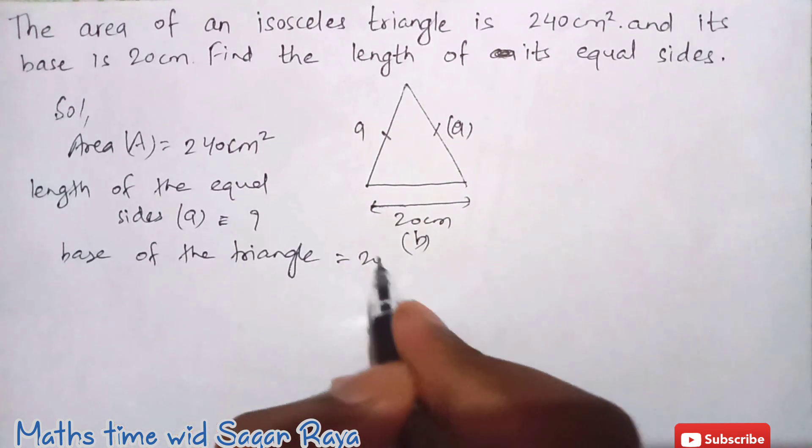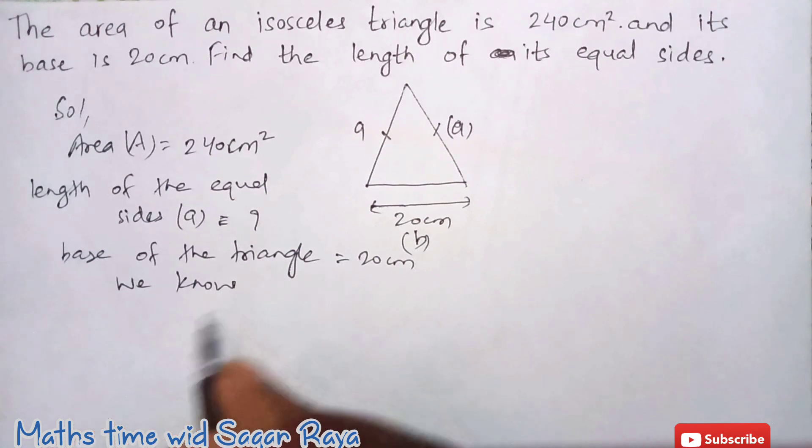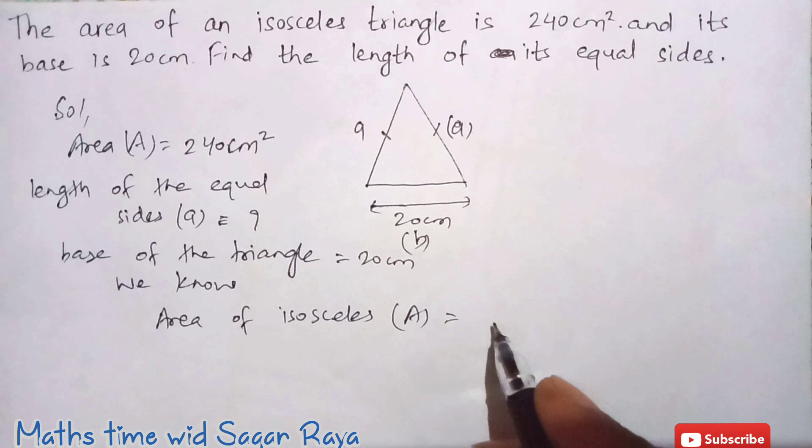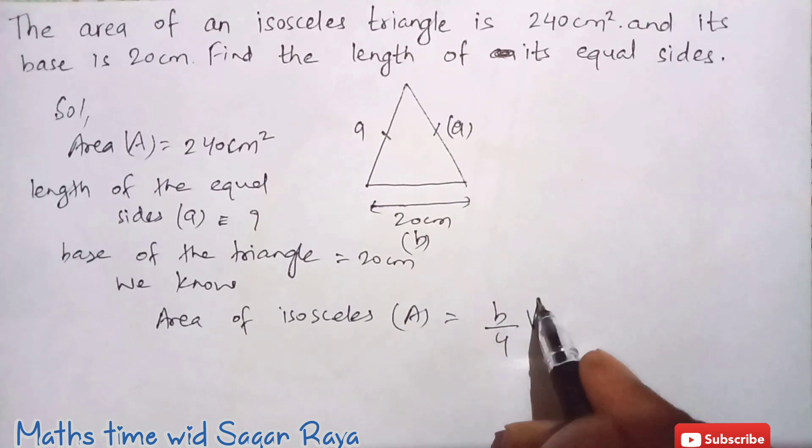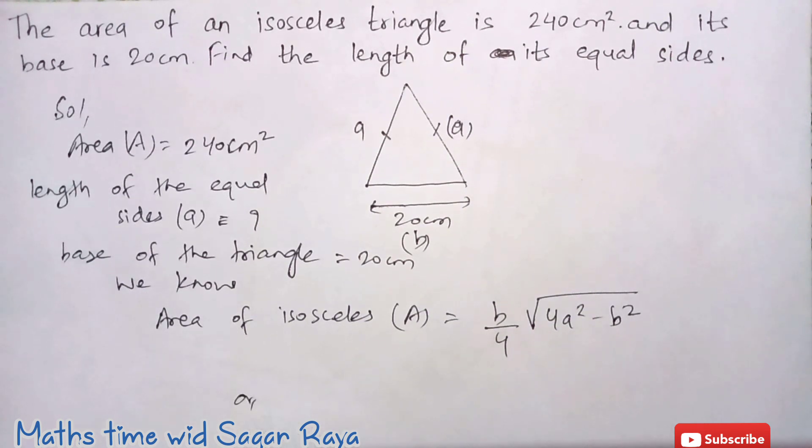Now length of the equal sides a equals to what, and base of the triangle equals to 20 cm. We know the formula for area of isosceles triangle. So area of isosceles triangle denoted by A is b by 4 root under 4a square minus b square.